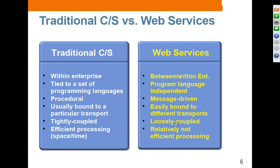Traditional client-server is tightly coupled between client and server. However, in web services they are loosely coupled — in fact, neither side knows how the other endpoint is implemented; they just send messages and expect responses. Web services is relatively less efficient compared to traditional client-server because in SOAP-based messaging, marshalling and unmarshalling between Java objects and XML needs to be done, causing some overhead.